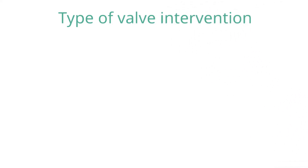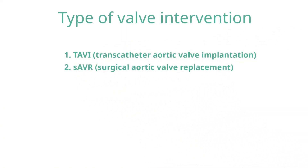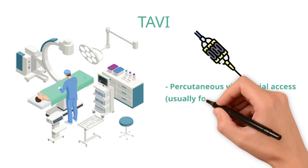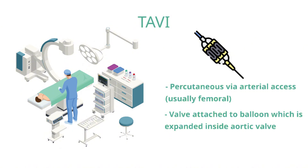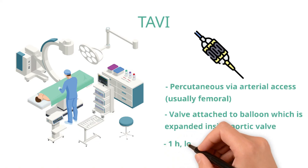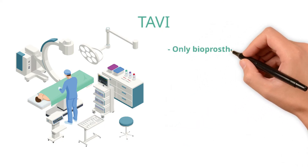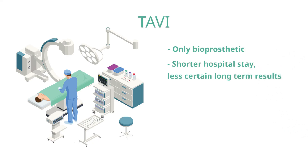There are two types of valve intervention: TAVI (transcatheter aortic valve implantation) or surgical aortic valve replacement. TAVI is performed in the catheter laboratory by an interventional cardiologist; the circulation is accessed percutaneously via a major artery — usually the femoral artery — and a valve on a deflated balloon is passed under x-ray guidance to the aortic root. The balloon and valve are then expanded in place, crushing the native stenosed valve to the side. The procedure can take as little as one hour under local anaesthetic, results in a short hospital stay of often three days, though long-term durability of TAVI valves is uncertain. Only bioprosthetic valves can be delivered via TAVI.